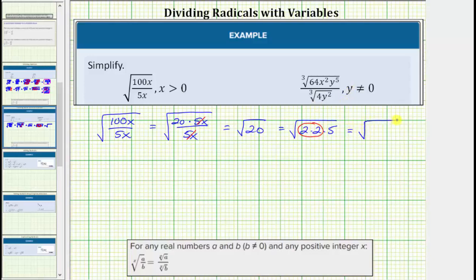This is equal to the square root of 2 squared times 5. And the square root of 2 squared simplifies perfectly to one factor of 2. The simplified expression is 2 square root 5.